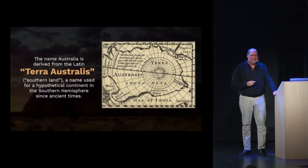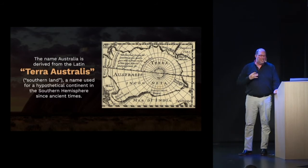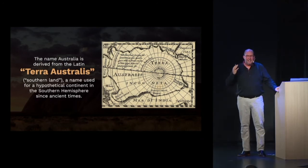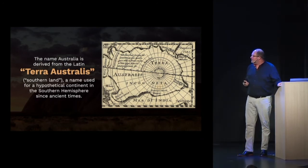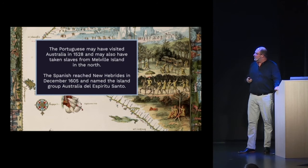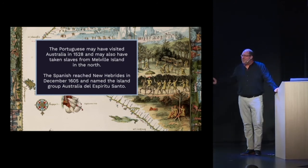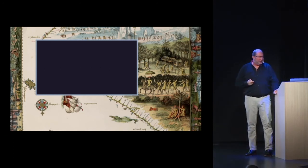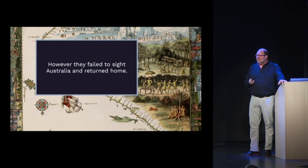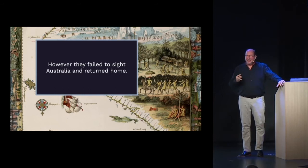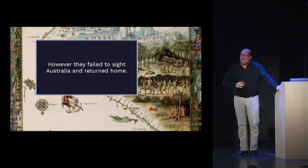The name comes from Terra Australis, meaning the southern land — the Terra Australis incognita, the hidden or undiscovered southern land. Portuguese may have visited Australia in 1528 and may have even taken slaves from Melville Island in the north. The Spanish reached New Hebrides in December 1605 and named the island Australia de Espiritu Santo — the southern land of the Holy Spirit — however they failed to sight Australia and returned home.